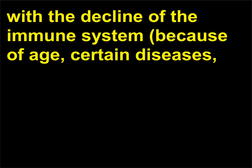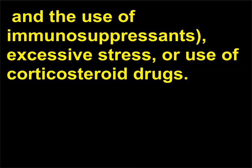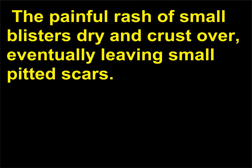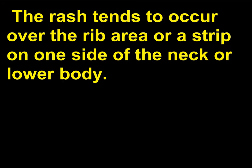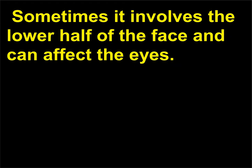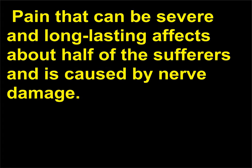Shingles can be triggered by age, certain diseases, and the use of immunosuppressants, excessive stress, or use of corticosteroid drugs. The painful rash of small blisters dry and crust over, eventually leaving small pitted scars. The rash tends to occur over the rib area or a strip on one side of the neck or lower body. Sometimes it involves the lower half of the face and can affect the eyes. Pain that can be severe and long-lasting affects about half of the sufferers and is caused by nerve damage.